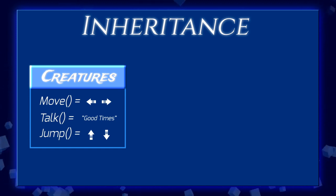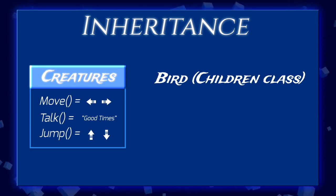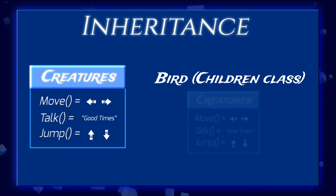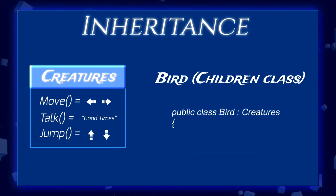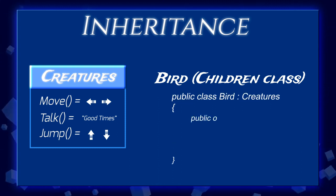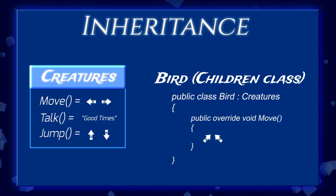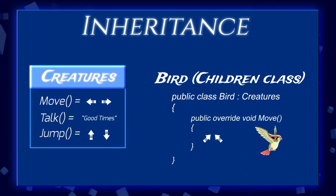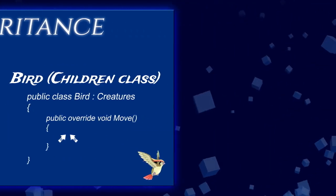We are going to create what we call a children class. The children class is basically just a class that inherits from creature — it replicates the creature's code, though this is transparent to us. All we see is that fancy colon after the declaration of our bird class, and then using some special keywords we can overwrite the move function and create our own custom behavior for Birdo.